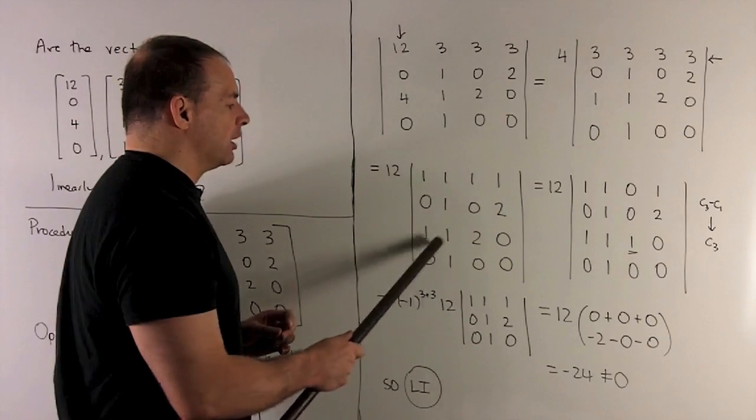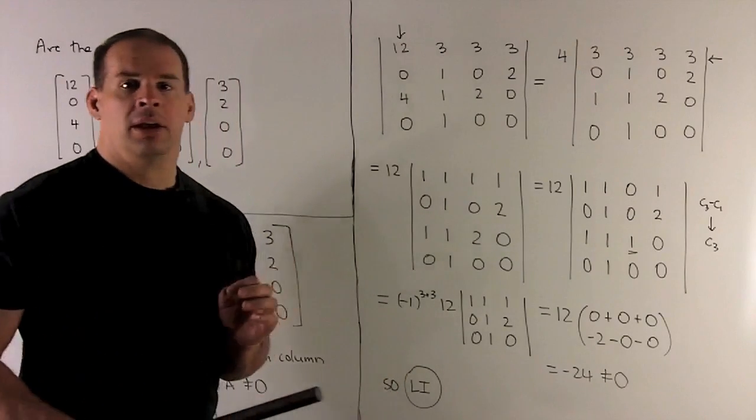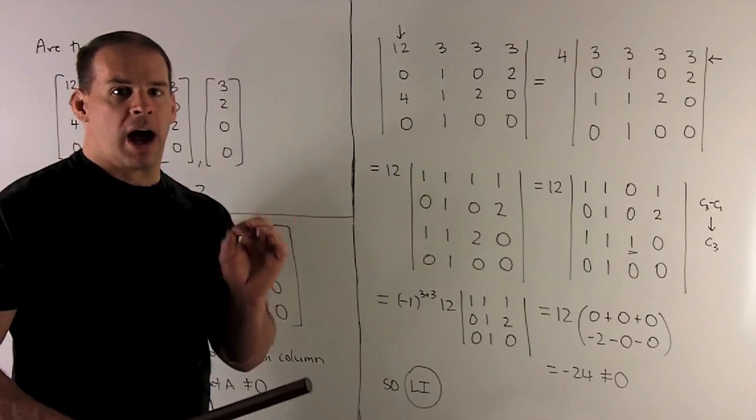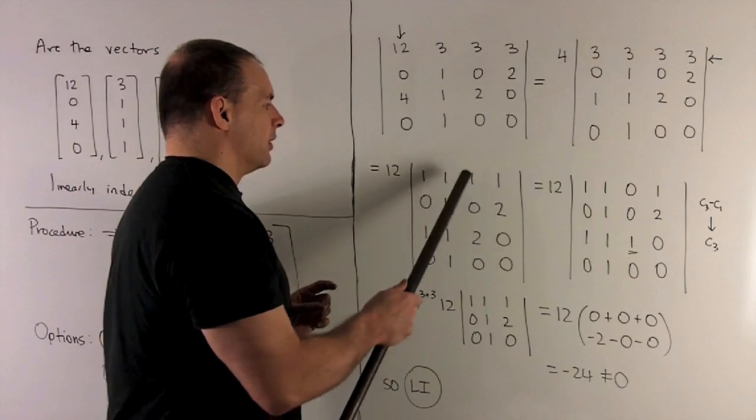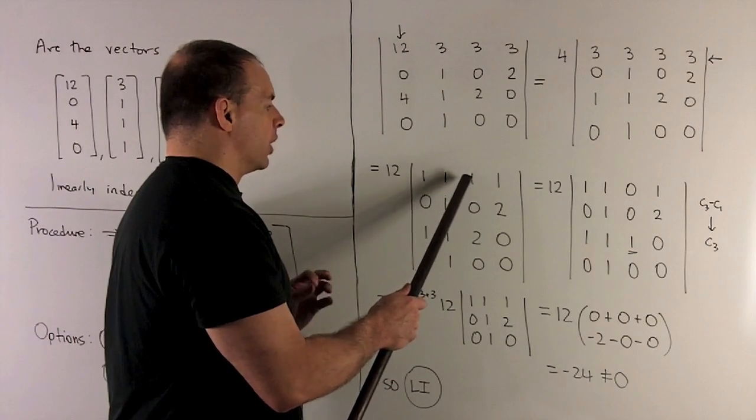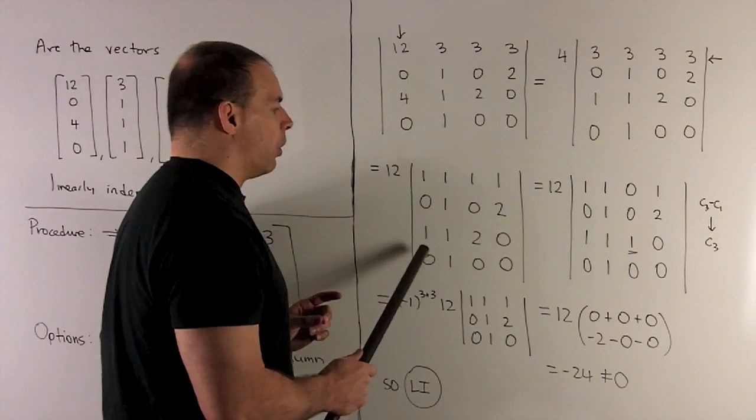Now we could do a cofactor expansion off of this one here, since we have all zeros. That would be good. But let's just do one more column operation. So I want to turn this two into a one, and this one into a zero. So what I'll do is we'll take column three, subtract off column one.